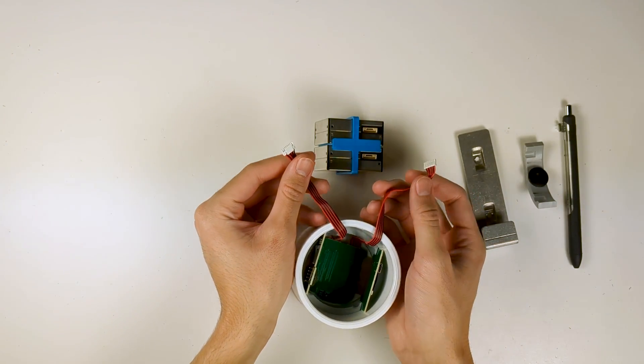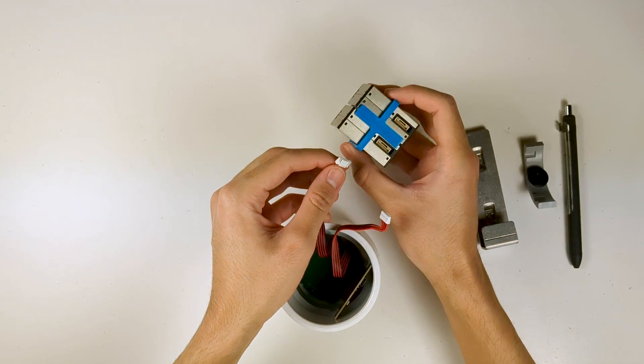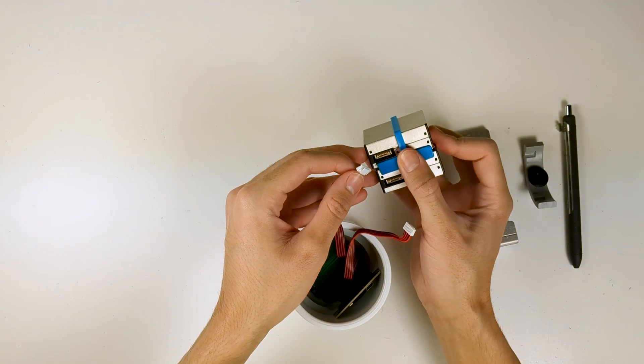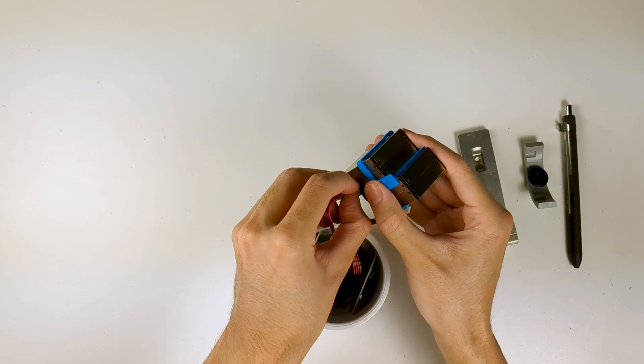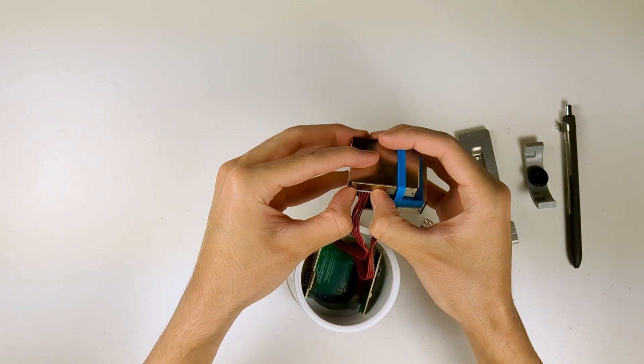The left cable is channel A and the right cable is channel B. The channel A cable will plug into the laser counter closest to you. The channel B cable will plug into the laser counter farther away.